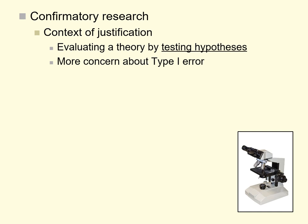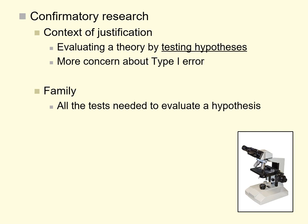That's in contrast to confirmatory research, done in the context of justification. This is where we're evaluating a particular theory by testing hypotheses based on it, or trying to replicate an established finding. Here we are concerned about type 1 error — we don't want a false positive, because it can lead us to draw wrong conclusions about the validity of our theory. In this context, you should care a lot about the number of tests needed to evaluate your hypothesis, and try to keep the family-wise error rate as low as possible.